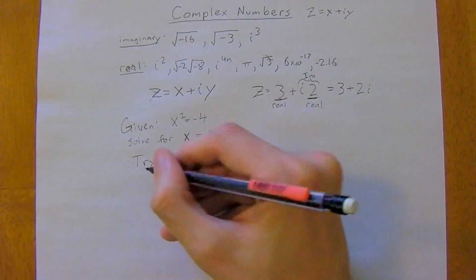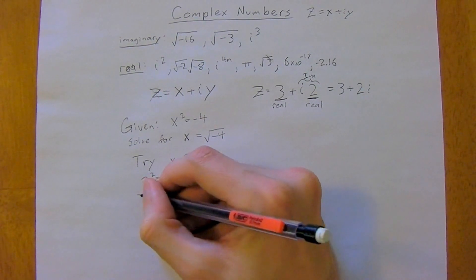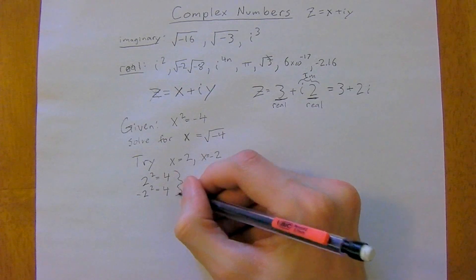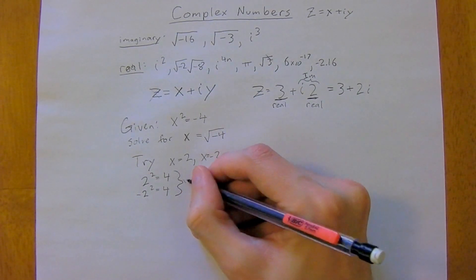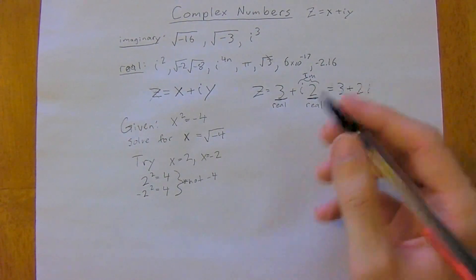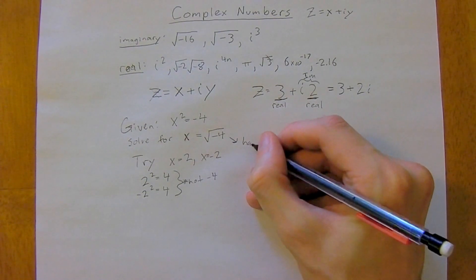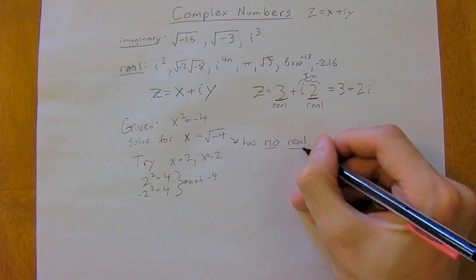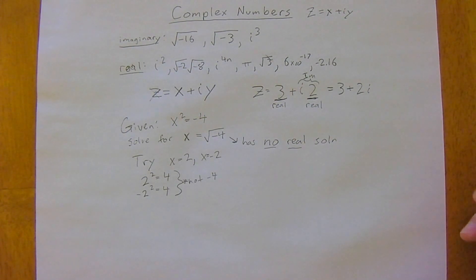So try x equals 2 or x equals negative 2. 2 squared equals 4, but negative 2 squared also equals 4, not negative 4. So this technically has no real solution.